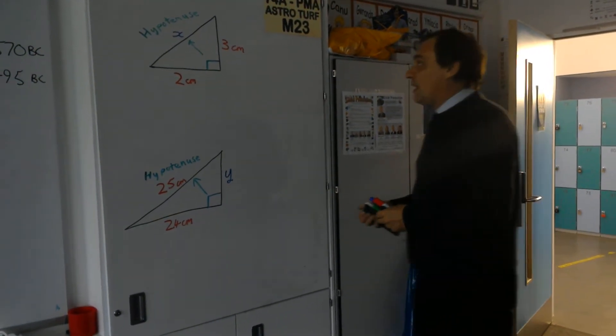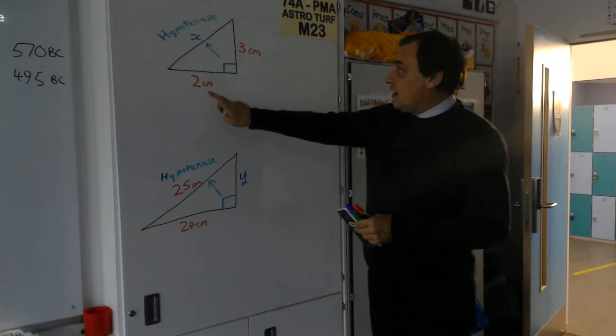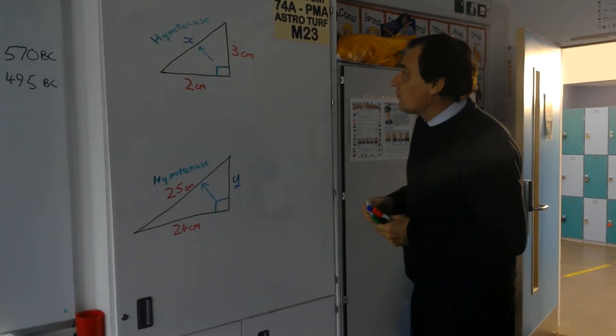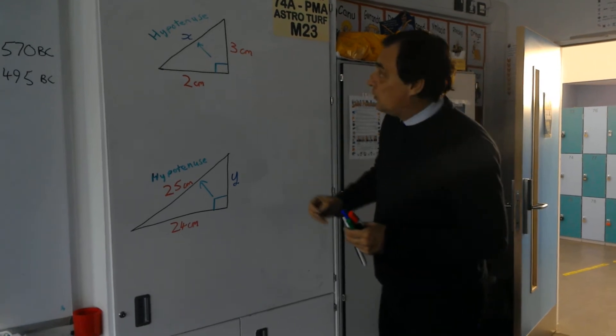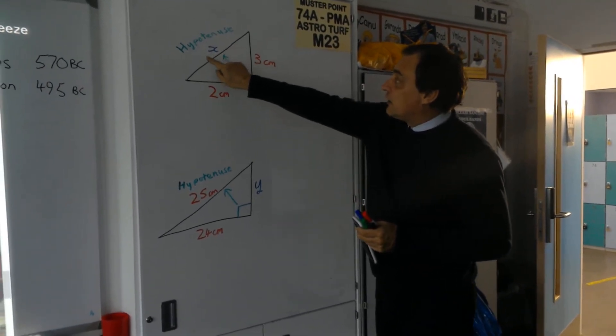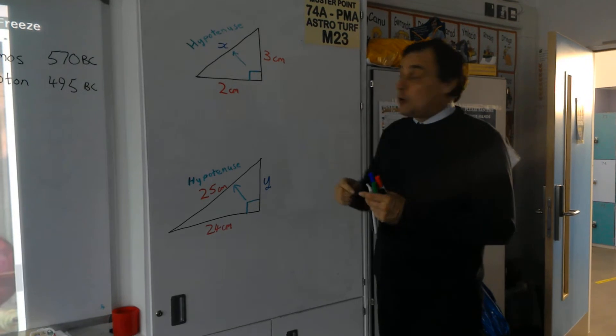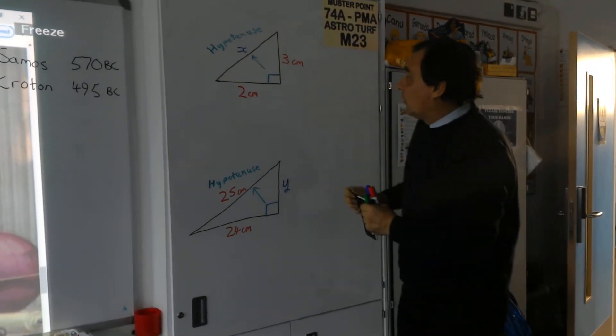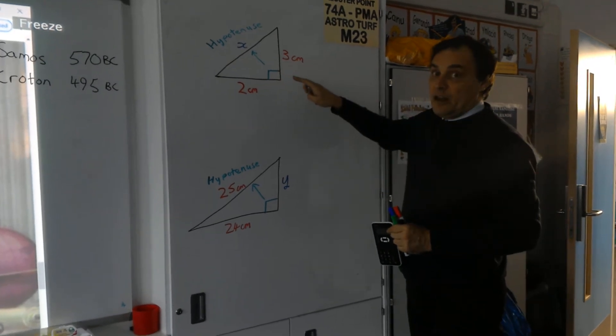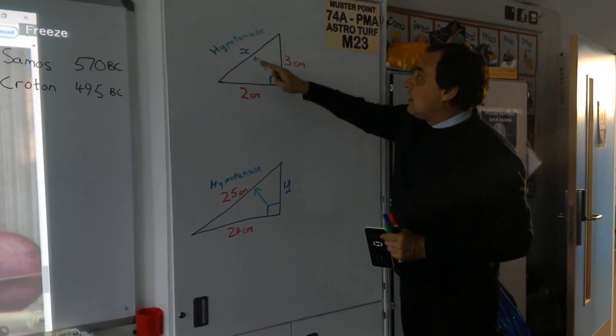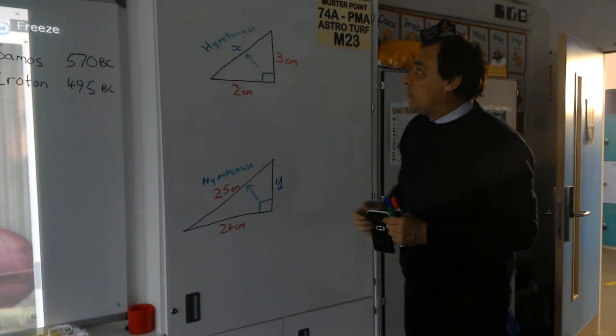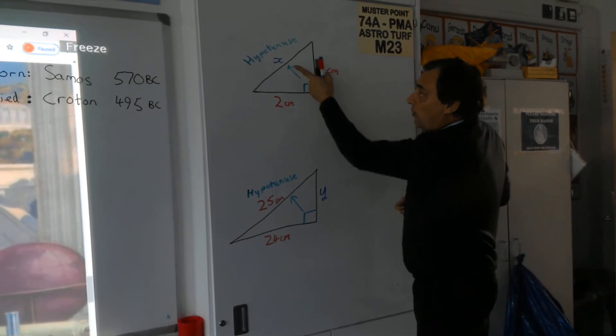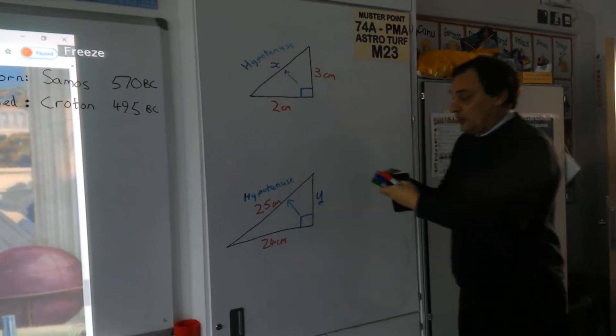Now, what Pythagoras found was that if he squared the length of the shorter two sides of the triangle, added them together, and then took a square root, he found that he could find the length of this side x called the hypotenuse. Now, the hypotenuse is the longest side of the triangle, and you can always find out where the hypotenuse is by looking at the side opposite the right angle. So there's your right angle there in green, arrow going opposite it, so the hypotenuse isn't touching the right angle.